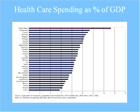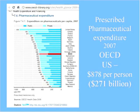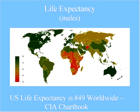We're spending more of our gross domestic product than any other developed country in the world — the bar at the top is the United States. Our pharmaceutical expenditures are $271 billion — more than anyone else. Yet our life expectancy is number 49 in the world according to the CIA chart book, despite the money we spend. This is a strong argument for investments in public health and prevention — but up until now, prevention has always been the last dollars spent.